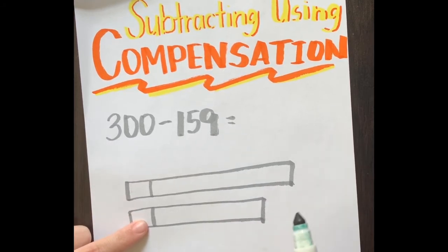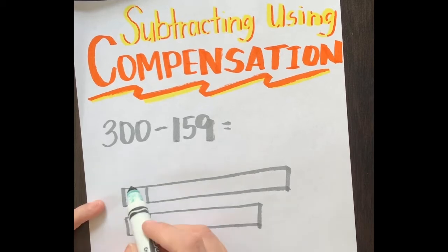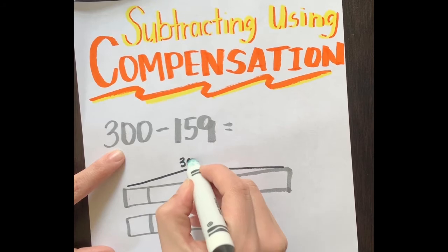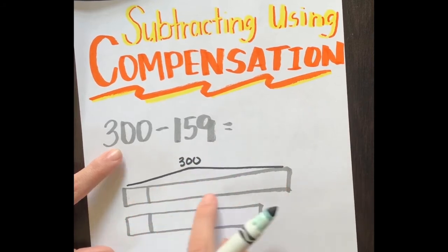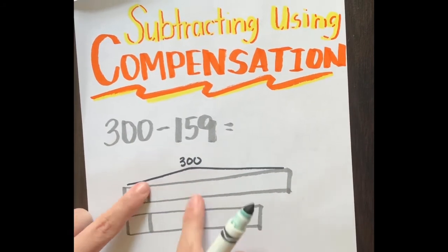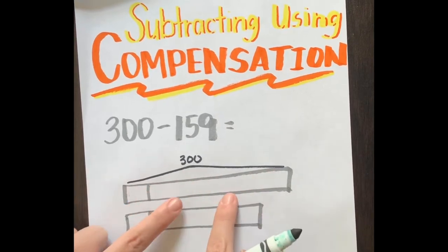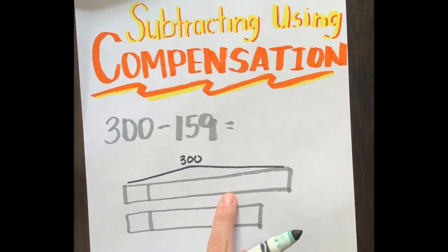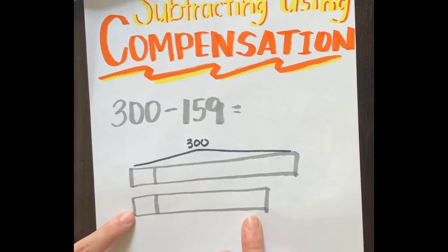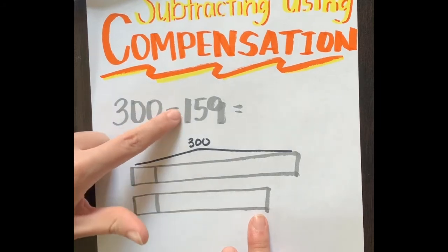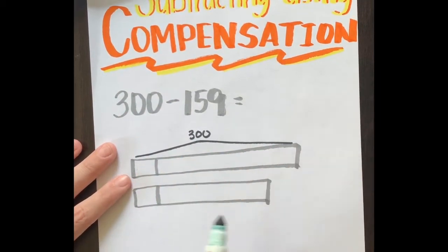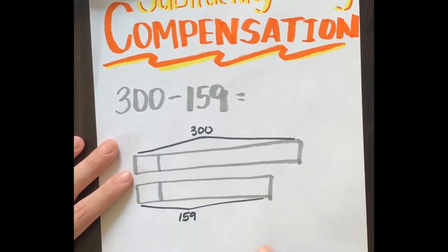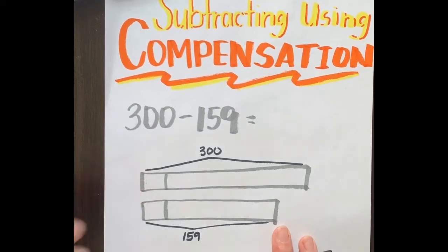My long tape is the number 300, the whole big tape, so I wrote it using a caret instead of filling it in because I'm not adding on this time, I'm going to be taking away. My smaller tape is 159, also with a caret. With tape diagrams before we added numbers; this time we're going to be taking away when we use compensation.